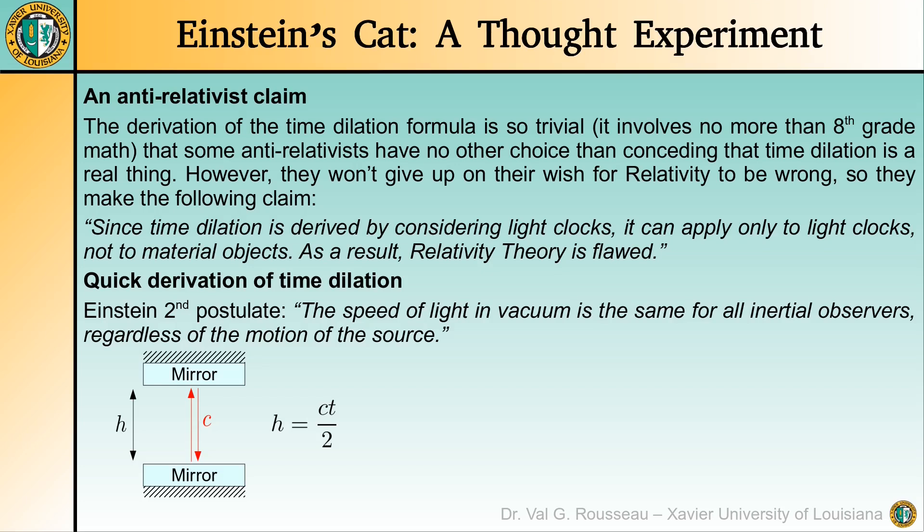So, we consider here an imaginary light clock that is at rest in some inertial frame and which consists of a light pulse traveling at the speed of light c, bouncing back and forth between two mirrors separated by a distance h. During one cycle, the pulse travels two times the distance h and this takes a time t. Thus, by definition of the speed, we have h equals ct over 2.